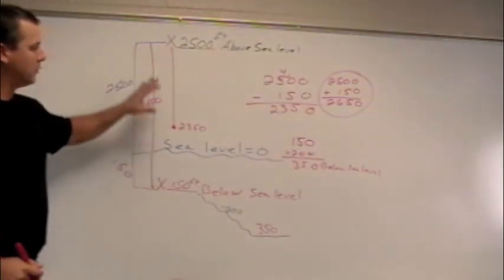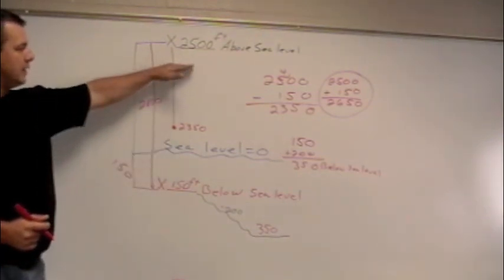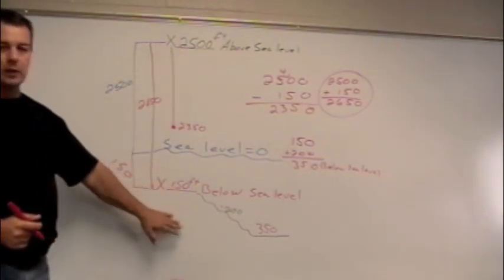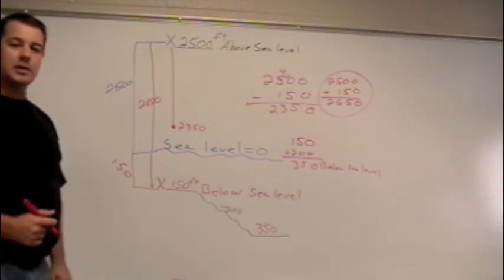So those are a couple of review problems with sea level. One above and below, and then two below. Hopefully this is helpful. Thank you.